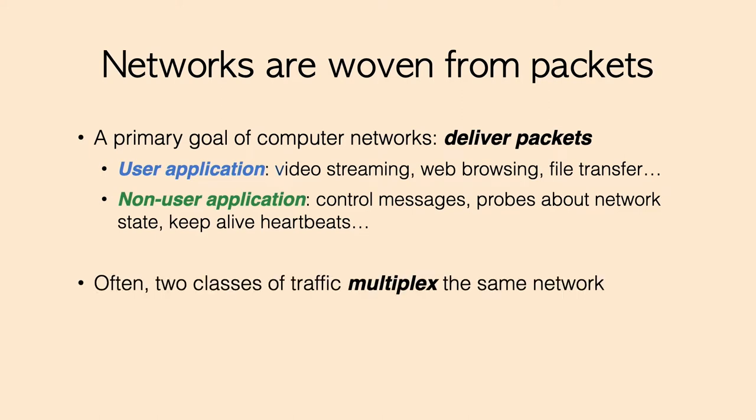For these non-user packets, in some cases they are sent over dedicated out-of-band networks. More often, they purposefully multiplex the same network for efficient resource utilization and bandwidth sharing. For instance, to obtain accurate measurement about the network state, active probing assumes that the probe packets experience the same network conditions as user packets.